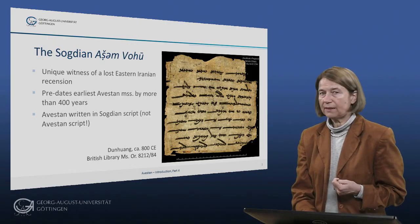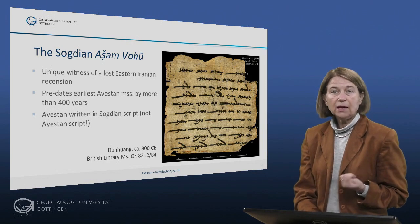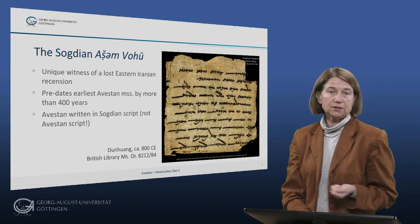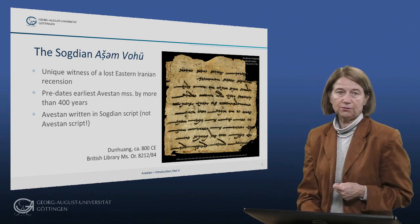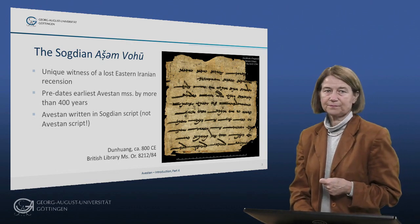We shall look at the Sogdian Ashenvohu again when we talk about the dialectal features of Avestan in the session on phonology. In the last session we saw how the Zoroastrian priests created the Avestan script artificially. In doing so they borrowed letters from existing scripts, in particular the Pahlavi book script, the Psalter script and the Greek alphabet, and they created new letters by adding diacritic marks to existing ones.